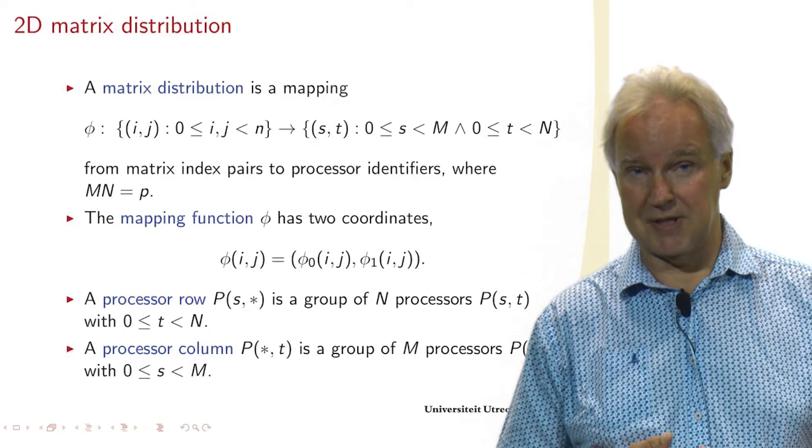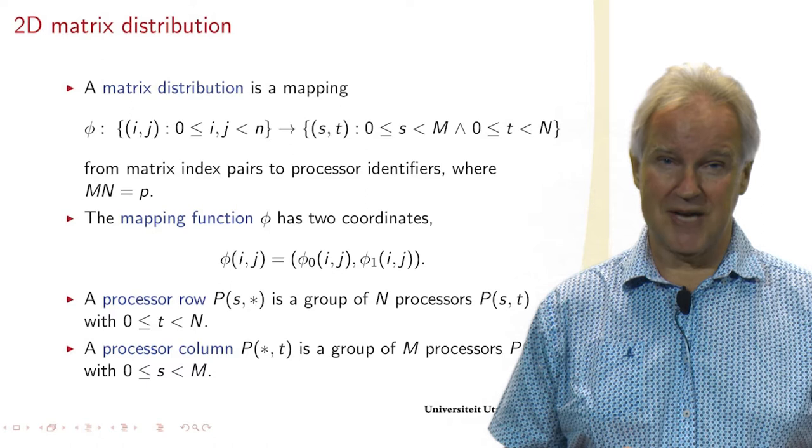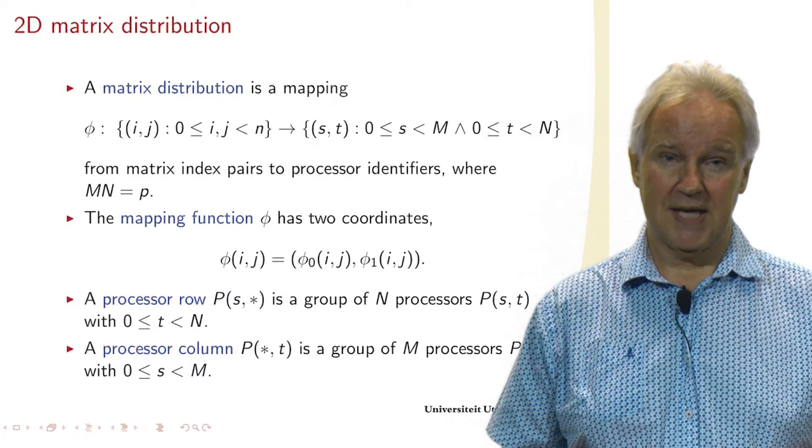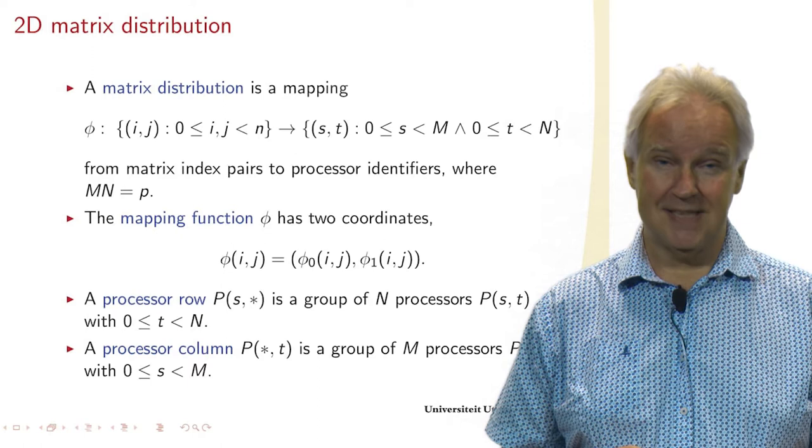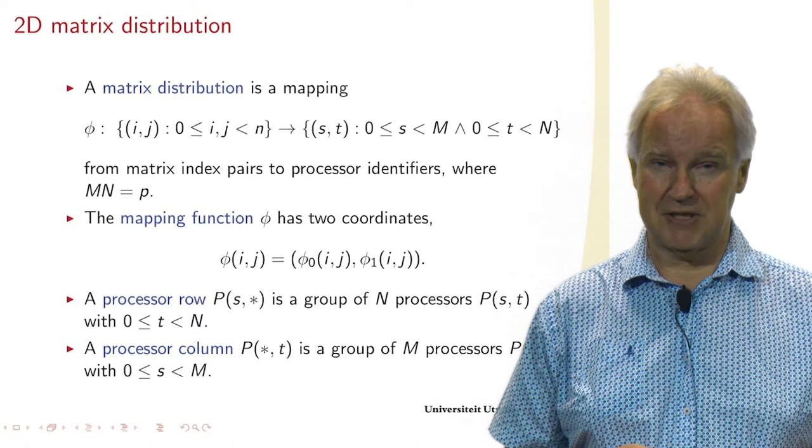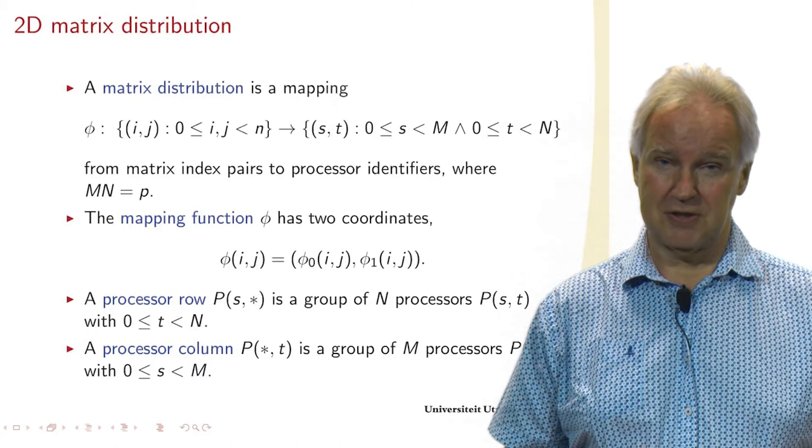Sometimes we number the processors in a one-dimensional fashion from 0 to P minus 1. But here, since we're talking about matrices and they are two-dimensional, we also number the processors in a two-dimensional fashion with M numbers S and N numbers T. And then we have that M times N equals P, the total number of processors.